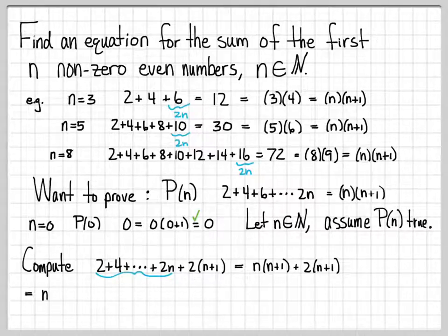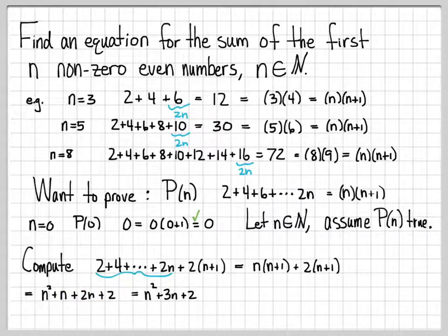If I multiply these out, I get n squared plus n for the first term, plus 2n plus 2 for the second term. I can combine like terms into n squared plus 3n plus 2. Then I can factor that as n plus 1 times n plus 2.